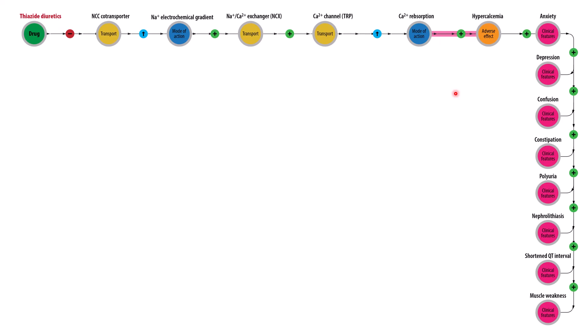This increased calcium reabsorption along the distal convoluted tubule can lead to hypercalcemia — though it doesn't always. Because it always increases calcium reabsorption, thiazides can be used to treat idiopathic hypercalciuria, where high calcium levels in the filtrate and urine increase the risk for calcium stone formation. Additionally, the increased calcium reabsorption can help treat osteoporosis by reclaiming calcium that would otherwise be lost in the urine during filtration.